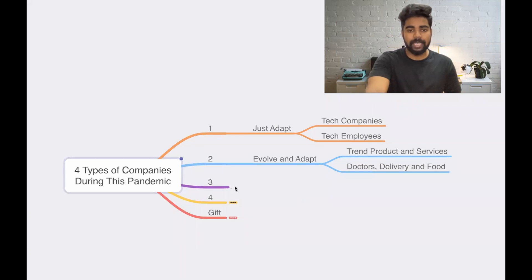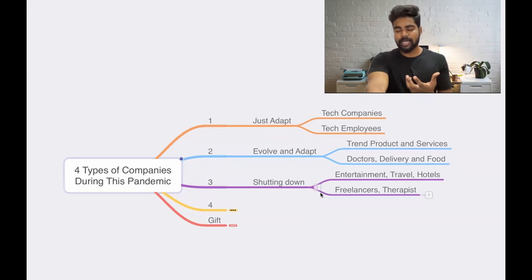Let's move on to the third type. Third type is nothing but companies which literally face a lot of problem in this situation during this pandemic and they are moving into shutting down their business. Shutting down their business or they get complete lockdown. They cannot survive during this pandemic. What are all the kind of companies?